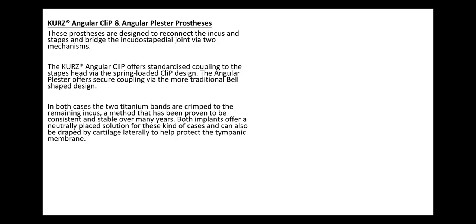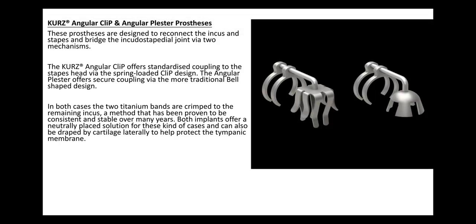These prostheses are designed to reconnect the incus and stapes and bridge the incudostapedial joint via two mechanisms. The Kurtz angular clip offers standardized coupling to the stapes head via a spring-loaded clip design. The angular cluster offers secure coupling via the more traditional bell-shaped design. In both cases, the two titanium bands are crimped to the remaining incus.